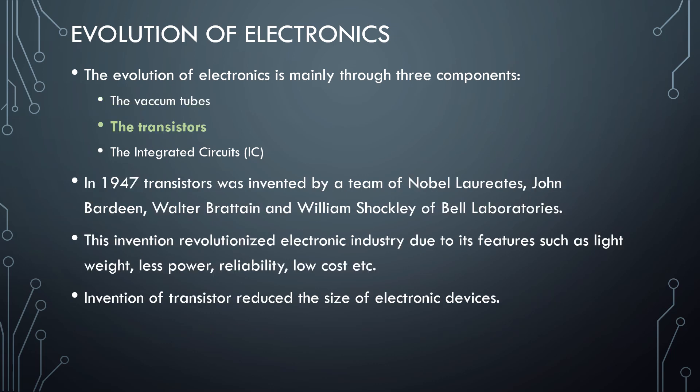The second component is the transistor. In 1947, the transistor was invented by a team of Nobel laureates — John Bardeen, Walter Brattain, and William Shockley — of Bell Laboratories. This invention revolutionized the electronic industry due to features such as light weight, less power consumption, reliability, and low cost. Since the invention of transistors, electronics became an unavoidable part of industry, replacing big components with small, lightweight ones.